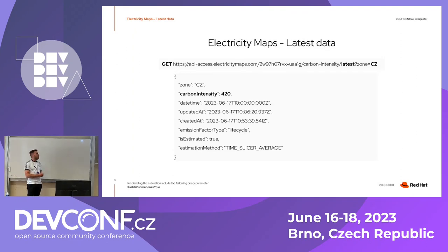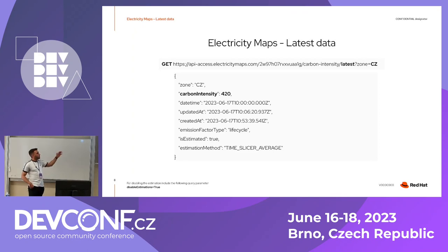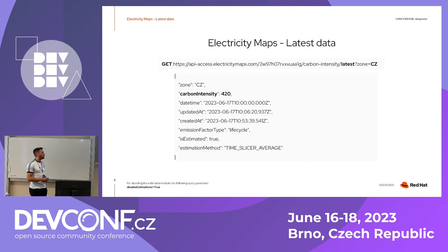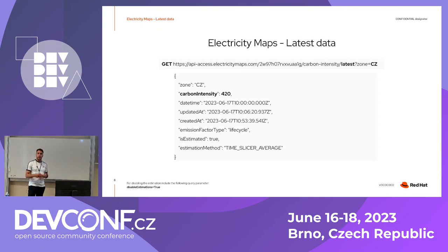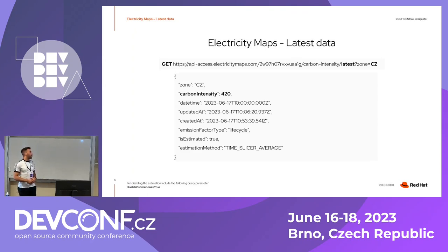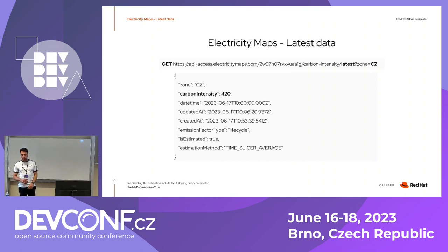Once we know the region, reading the real data emissions from the carbon intensity will require the following endpoint. You will see 'latest' at the end of the endpoint and the zone code obtained previously. Taking a look at the response for the selected zone — in this case Czechia — we have this carbon intensity value. This number will be lower when the electricity is cleaner, meaning produced by renewable sources, and higher when more fossil fuels have been used. This is measured in grams of carbon per kilowatt hour. If you want to disable estimations for this endpoint, you can include the query parameter 'disable estimations' set to true.